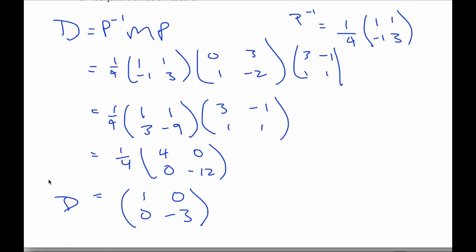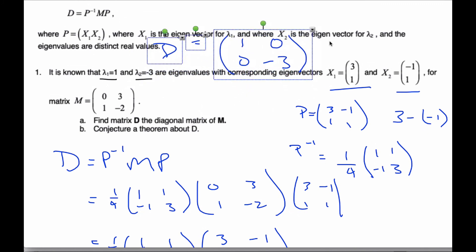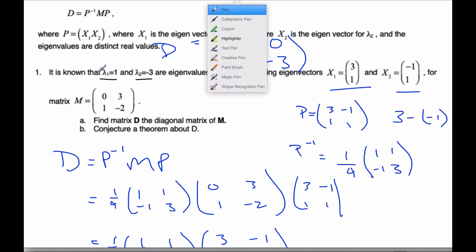And so one thing I want you to recognize, though, if we look to what we have up here, our eigenvalues are specifically these values. Here is my eigenvalue of 1, here. Negative 3, here. That is not a coincidence. So hopefully you recognize that.